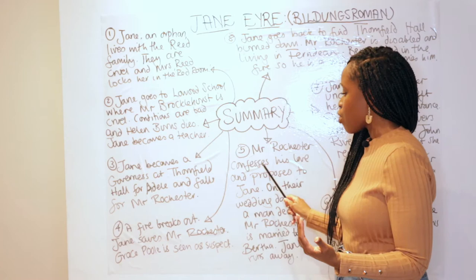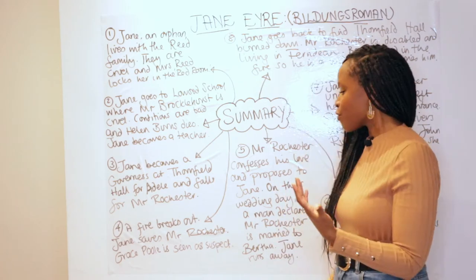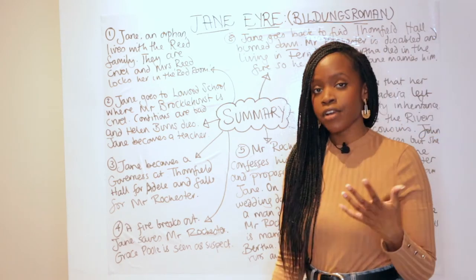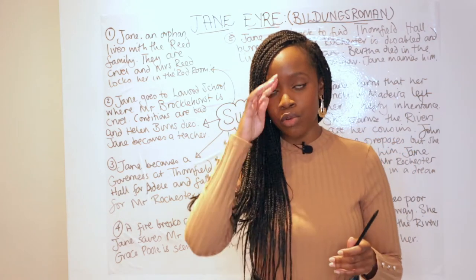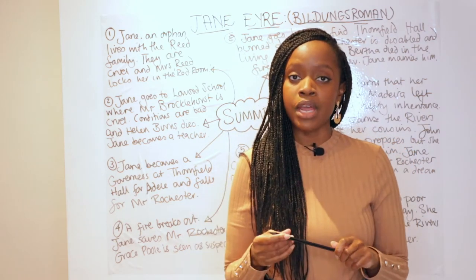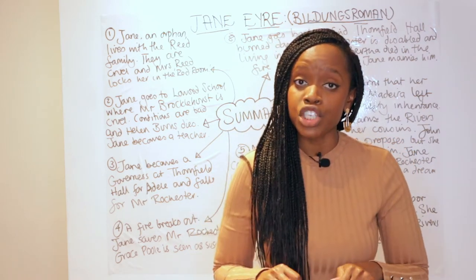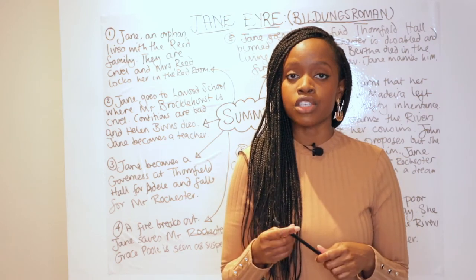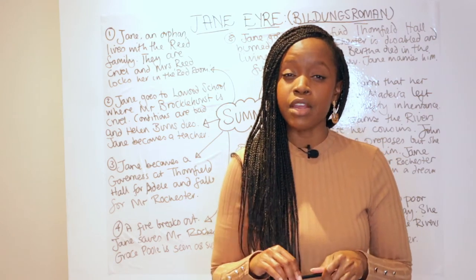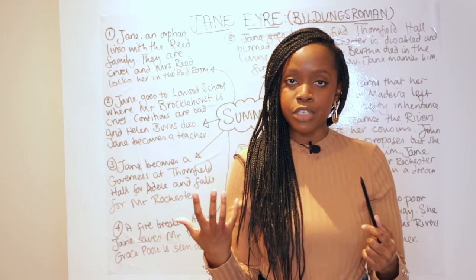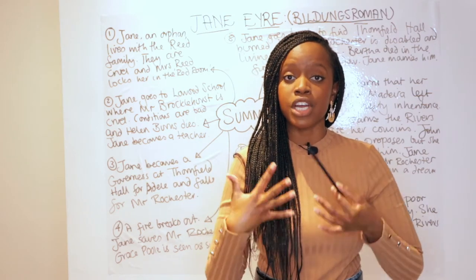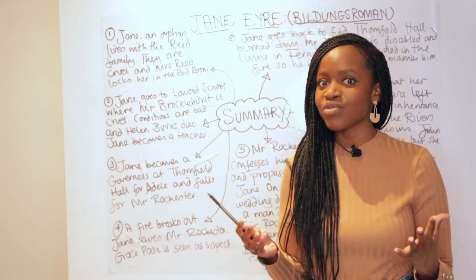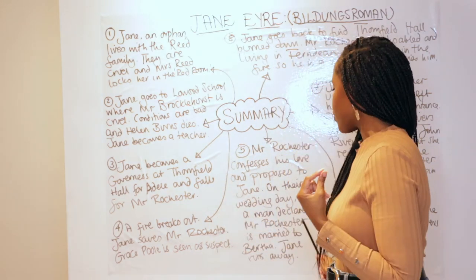Mr. Rochester ultimately confesses his love for Jane and proposes to her. At first she is surprised because she thought he was going to marry an upper-class woman called Blanche Ingram. However, he shows his disdain for pretentious upper-class women and really respects Jane for her spirituality, composure, and intellect. They agree to marry and Jane is very happy.